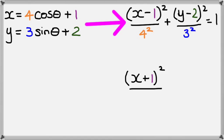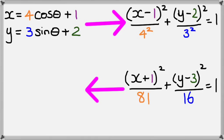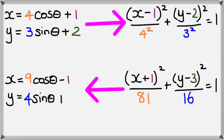From there, let's look at going backwards. If you have (x plus one) squared divided by 81 plus (y minus three) squared divided by 16 equals one, writing this back in parametric equations is pretty much the same as what we did with circles. We're going to have x equals square root of 81, which is 9, times cos theta, and because it's plus one inside the brackets, on the outside it's going to be minus one. Then you've got y which equals square root of 16, which is 4, times sine theta, and we've got plus 3.